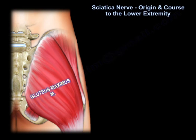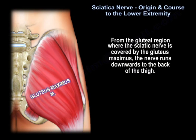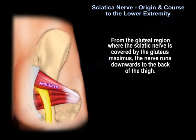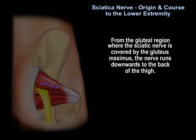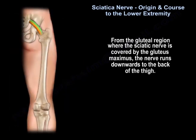From the gluteal region, where the sciatic nerve is covered by the gluteus maximus, the nerve runs downwards to the back of the thigh.